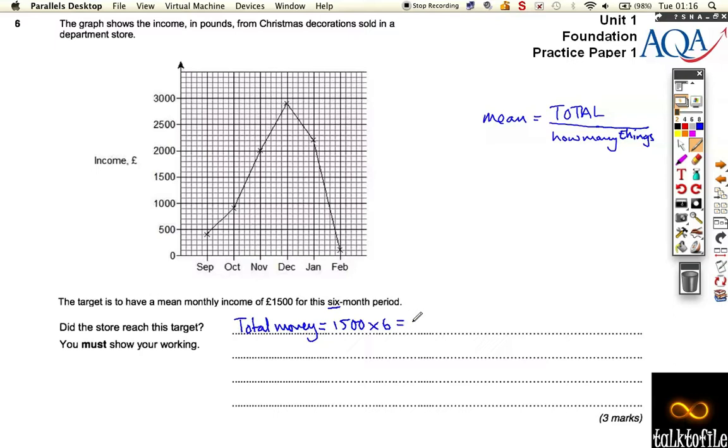Which is, it's got to be a total of, what's that, 60, 90, sorry, 9,000. A little bit slow there, you can check that on your calculator. So, the total of all those things has got to be 9,000. Just do 1,500 times 6.